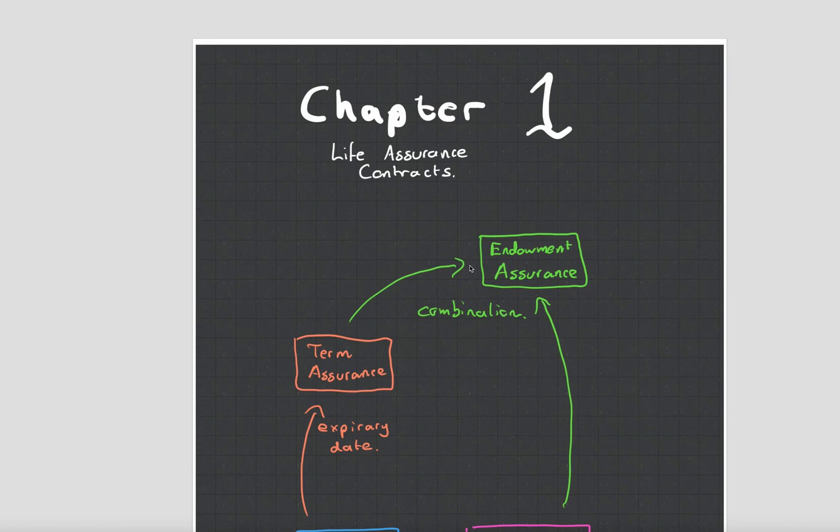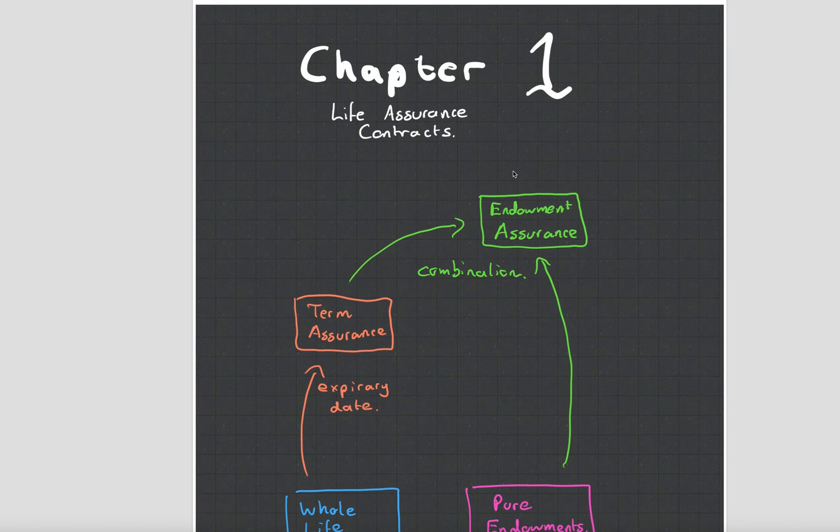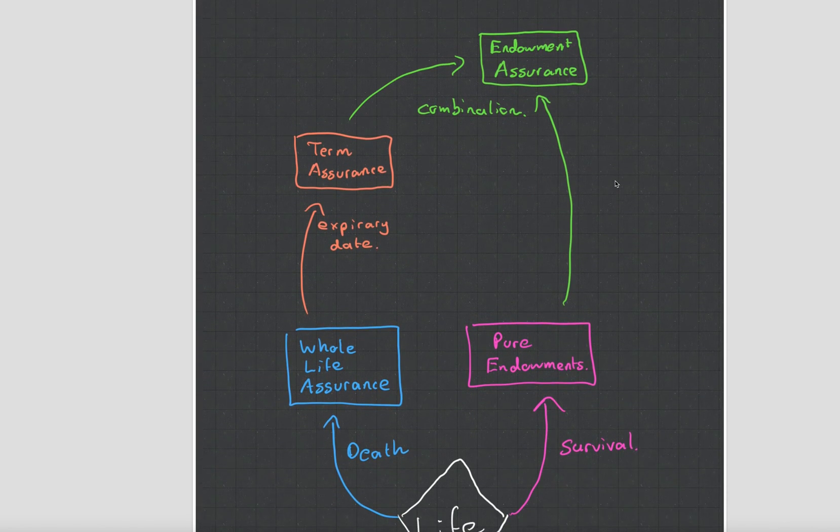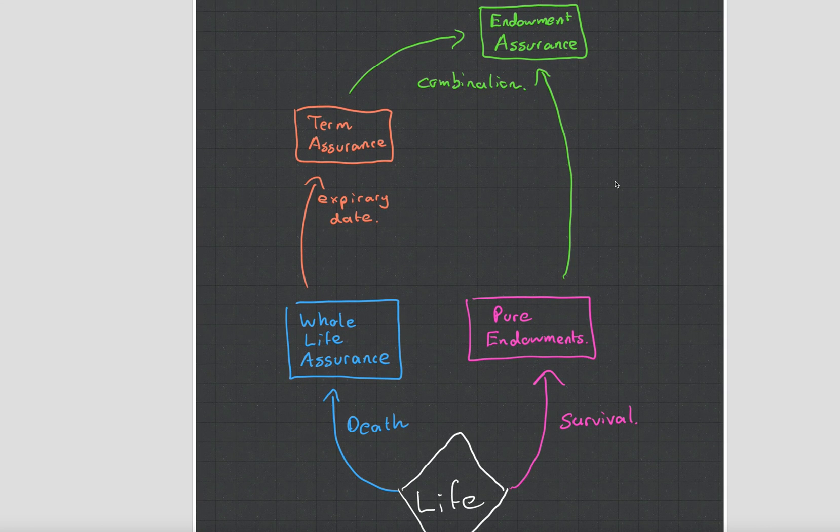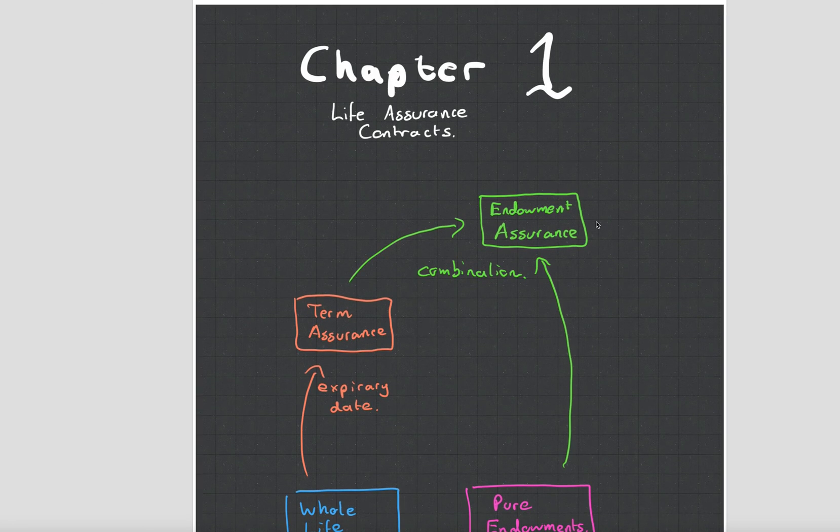So yeah that is basically chapter one life assurance contracts for CT5 and if you want to learn something from this chapter just remember this diagram you can either die or you can survive. If you die you get whole life assurance. If you're going to survive get pure endowment. This one whole life assurance can have an expiry date and you can combine them to get the stupid contract known as endowment assurance. And yeah that is chapter one life assurance contracts. I'm MJ the student actuary. Thank you for watching.